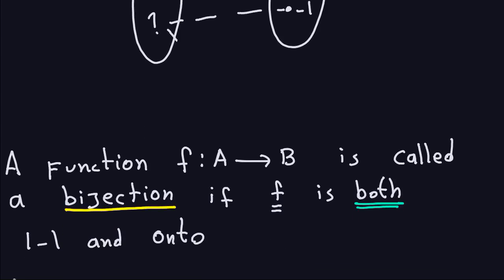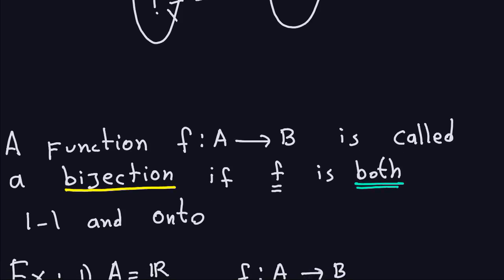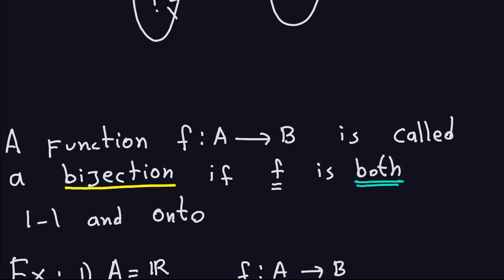The real reason we're talking about onto and one-to-one is because we want to define what a bijection is, since bijections are important in cryptography. A function is a bijection if it is both one-to-one and onto — it has both properties we just talked about, at the same time.